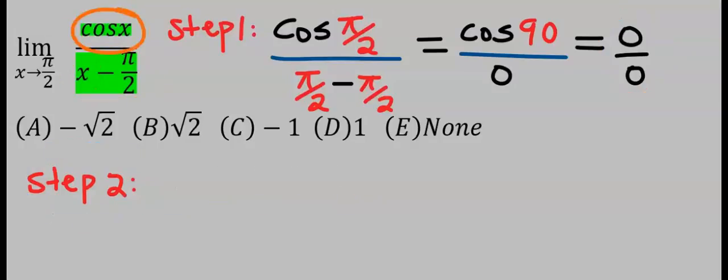Differentiate cos x and we are going to get minus sine x. Next we are going to differentiate x and we are going to get one. Next we are going to differentiate π over 2 and we are going to get zero.